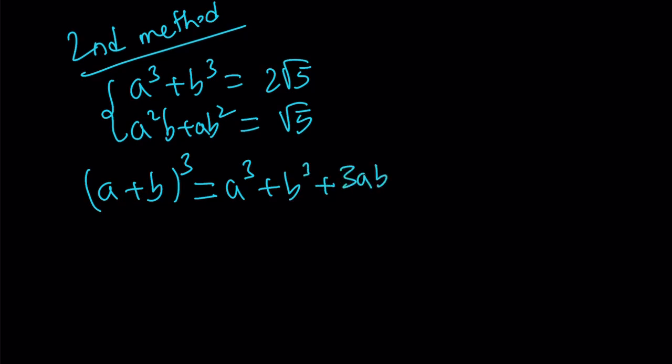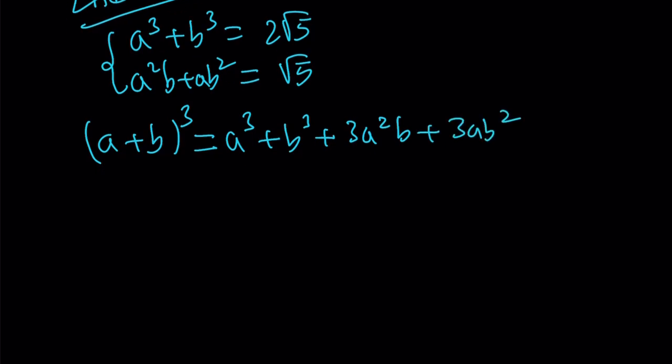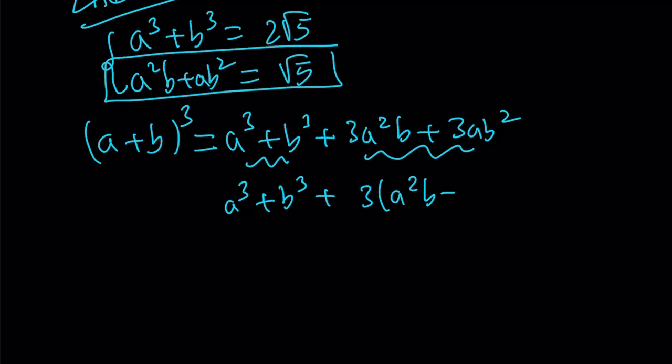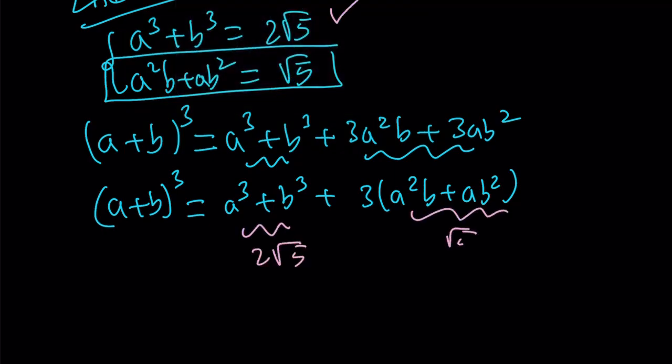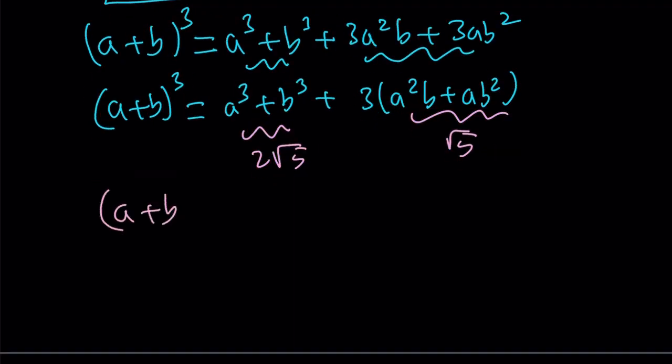The motivation is that I have the sum of two cubes. (a+b)³ is a³ + b³ + 3a²b + 3ab², but I can write it as 3ab(a+b). Notice that I know this, and I can find this because I have this multiplied by 3. Let's go ahead and take out a 3. That is (a+b)³. And from here, a³ + b³ is given as 2√5, and this is given as √5. Their sum is 5√5 as before.